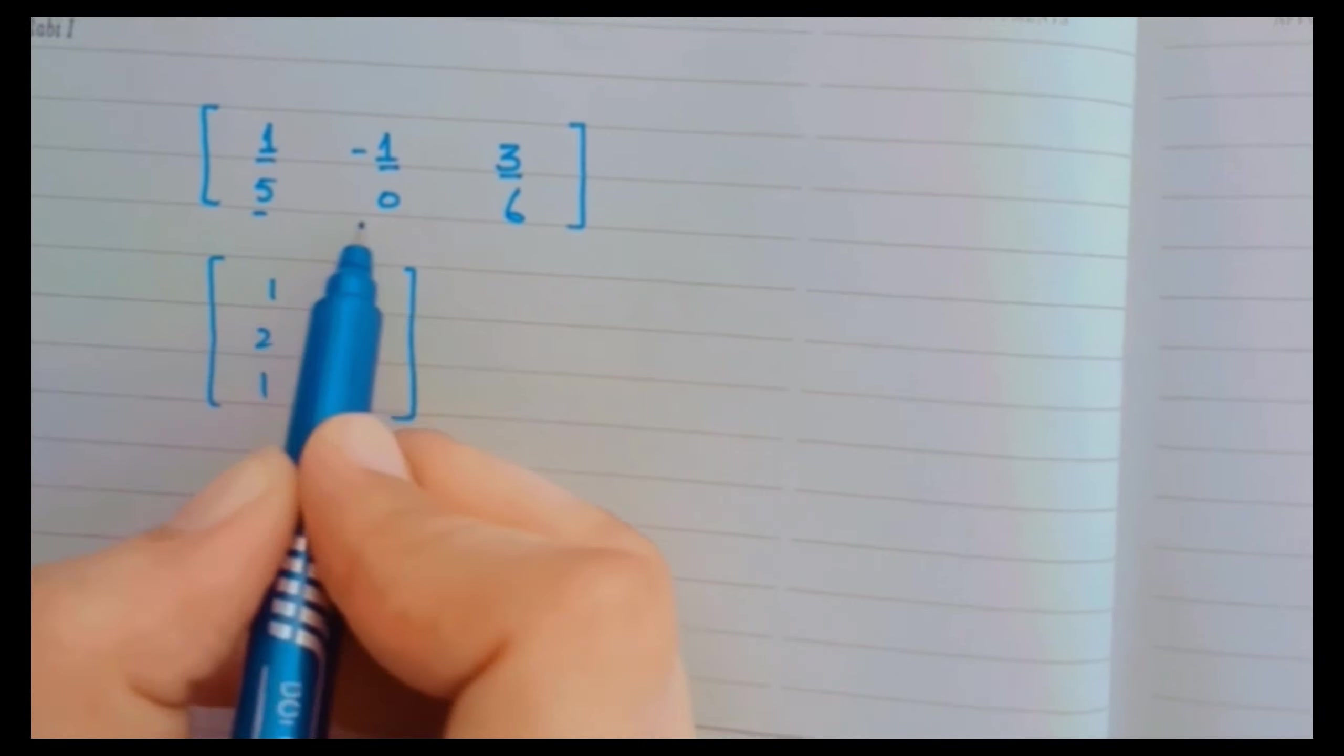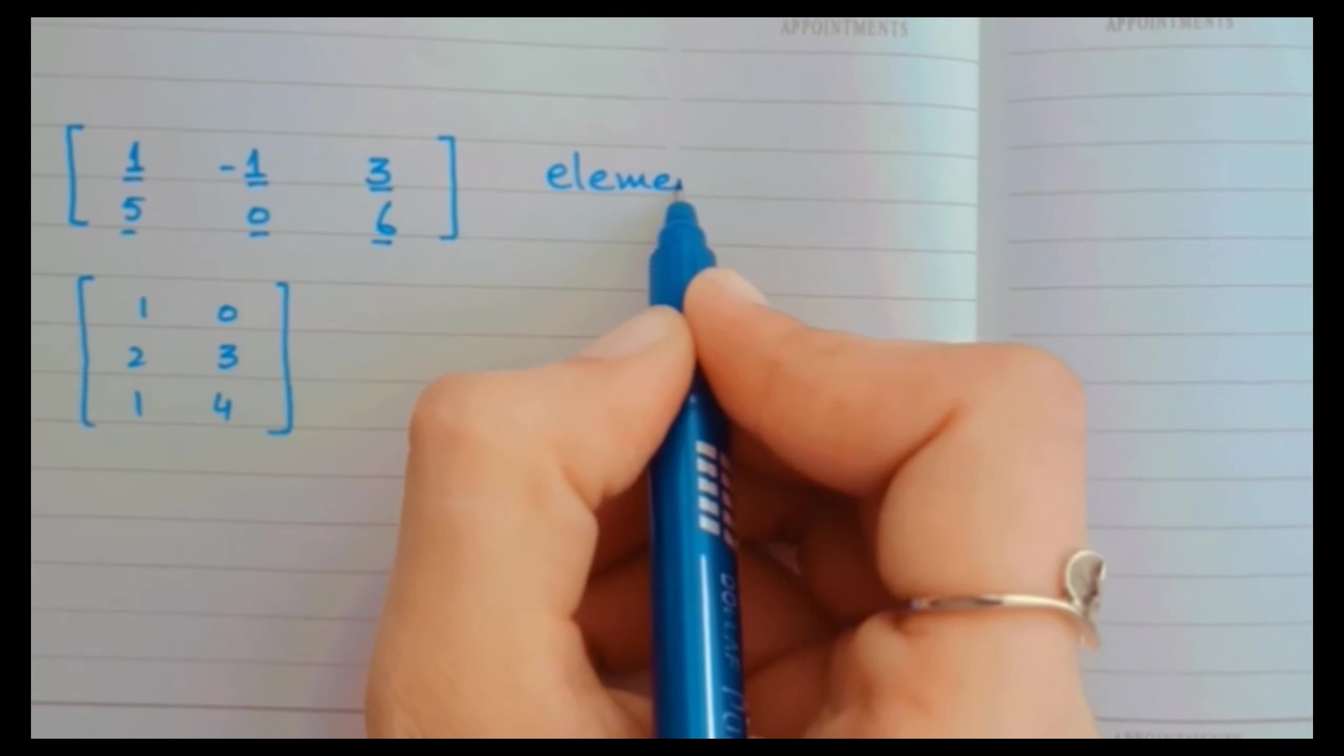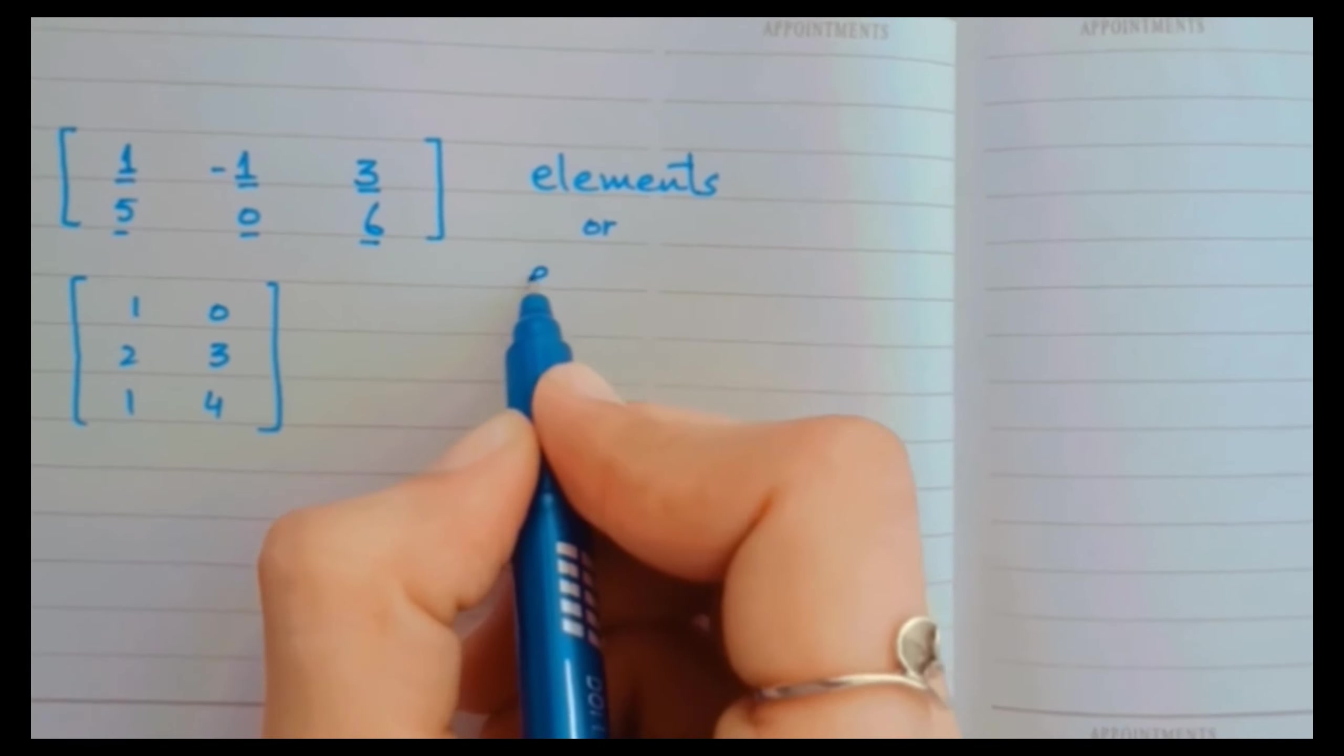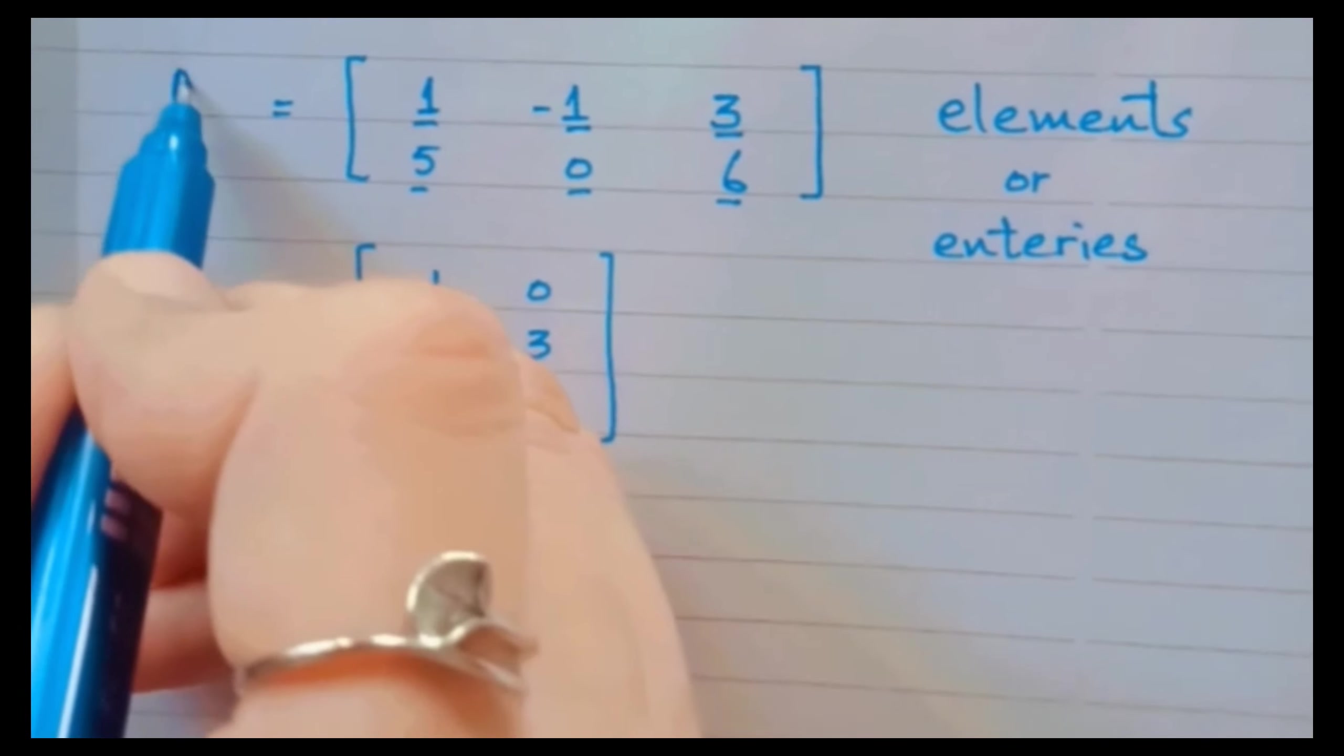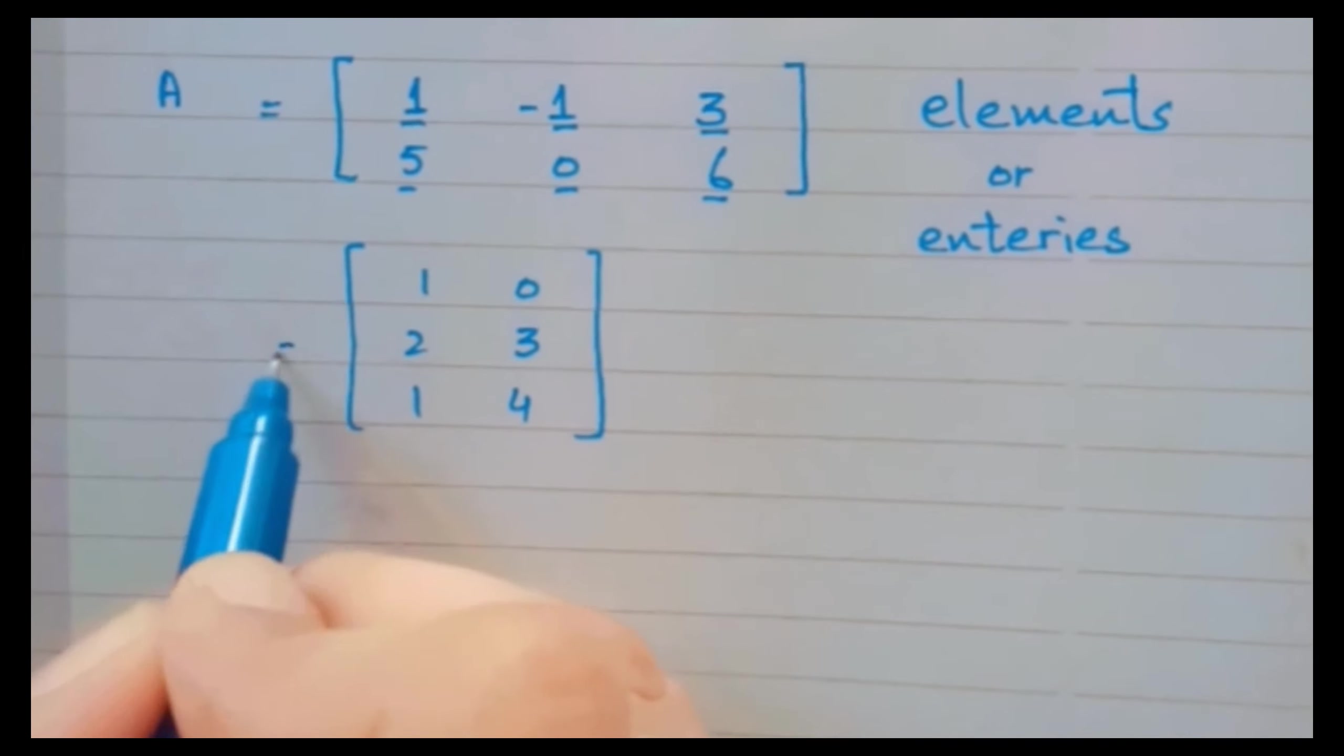And the numbers which are written inside those brackets and proper rows and columns, they are called entries or the elements. Matrices are always named by the capital letters, not by the small letters.